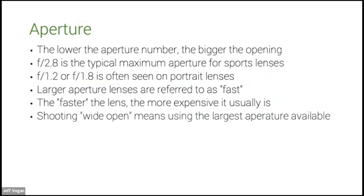The term 'shooting wide open' means using the largest aperture available. Some of you might have a 1.8, 2.8, or a 4, 5.6 — whatever your lens offers. Shooting wide open refers to the biggest hole or smallest aperture number available for your equipment.